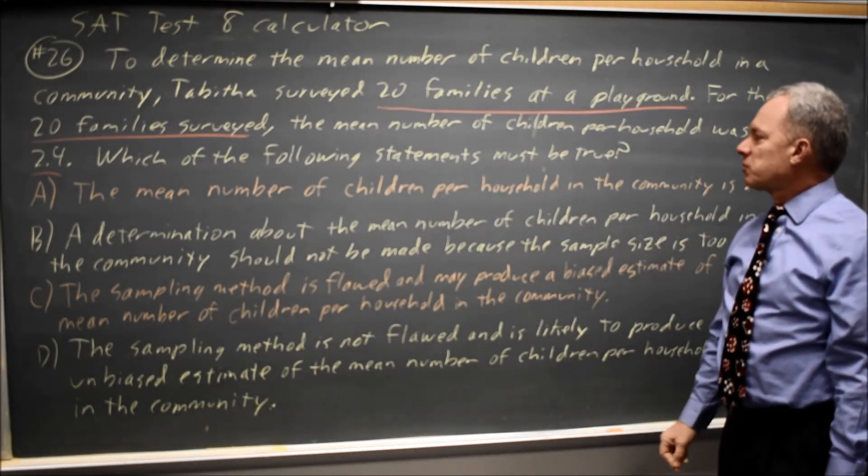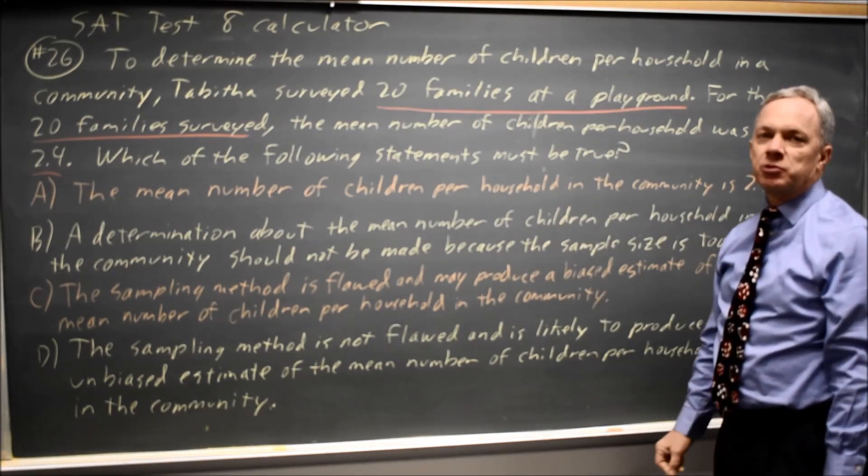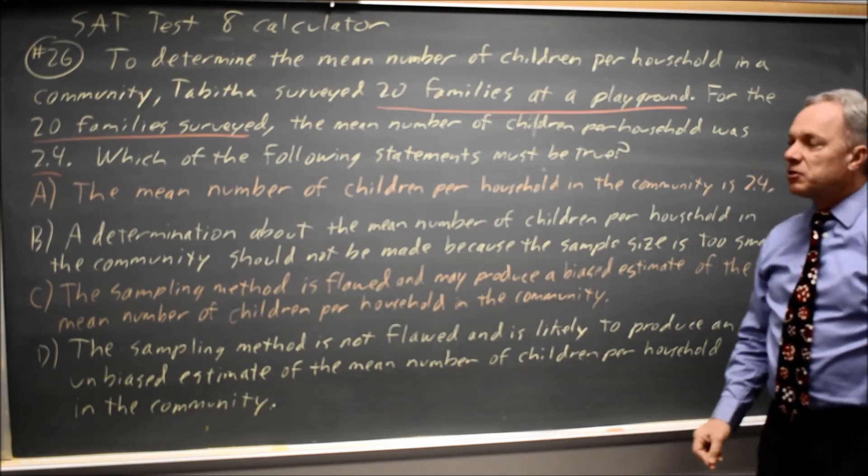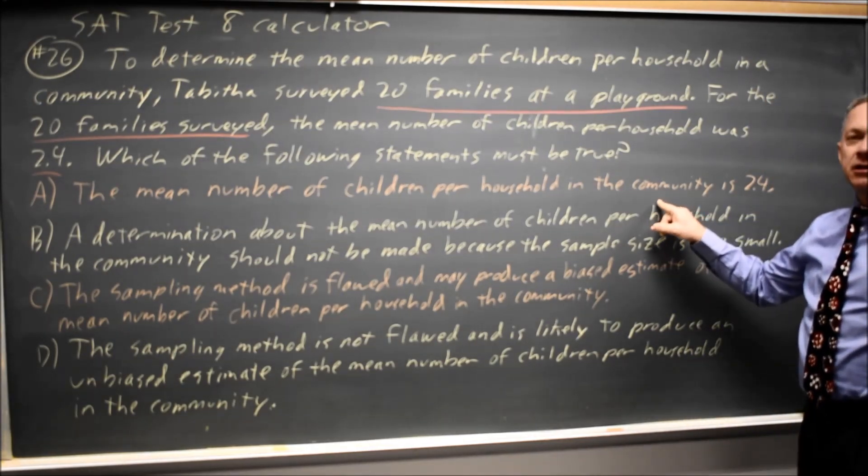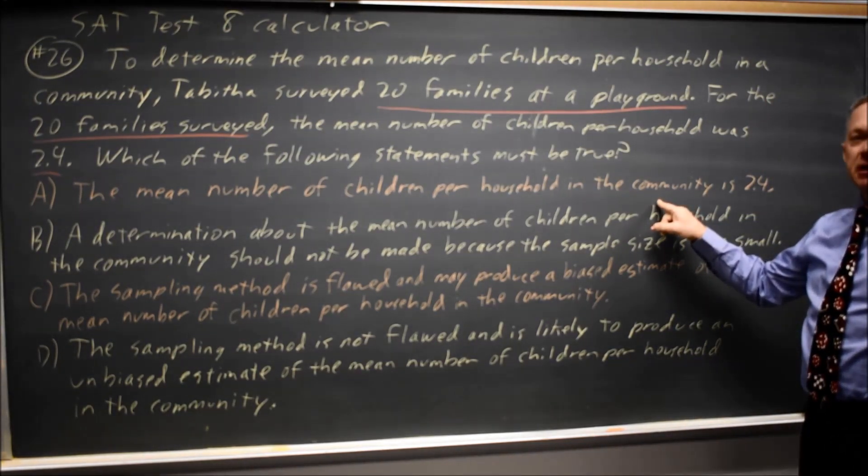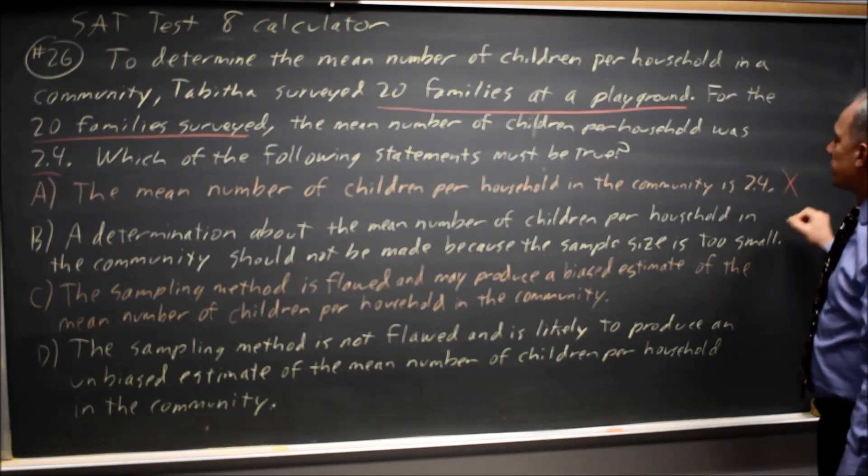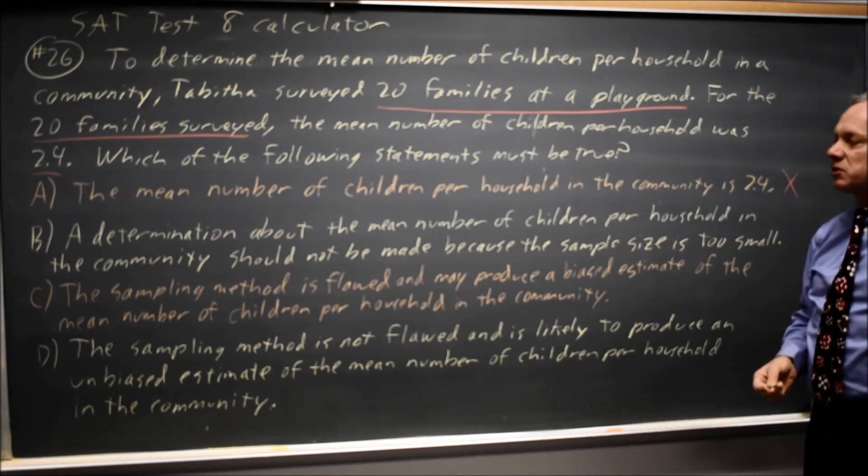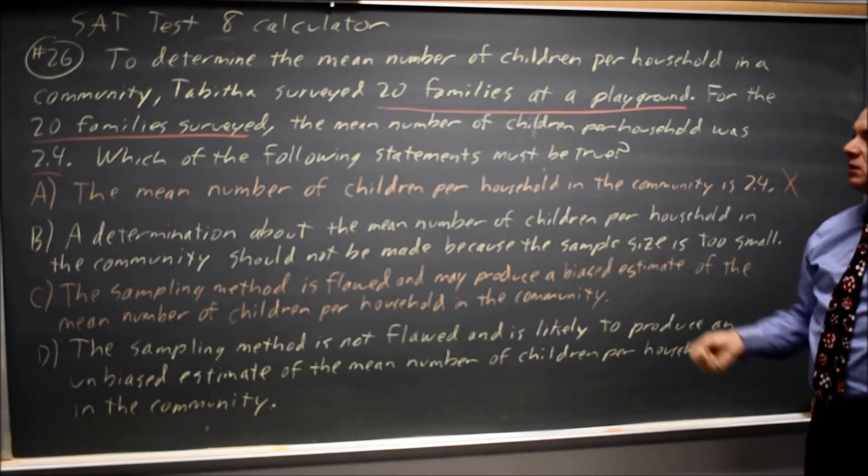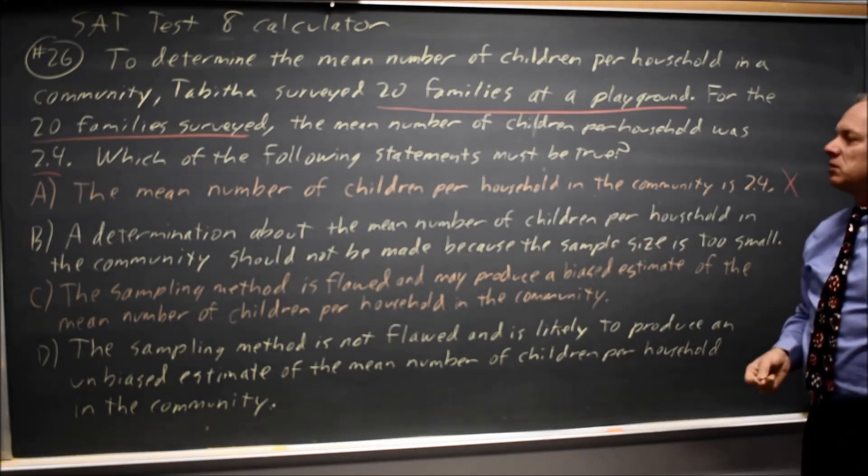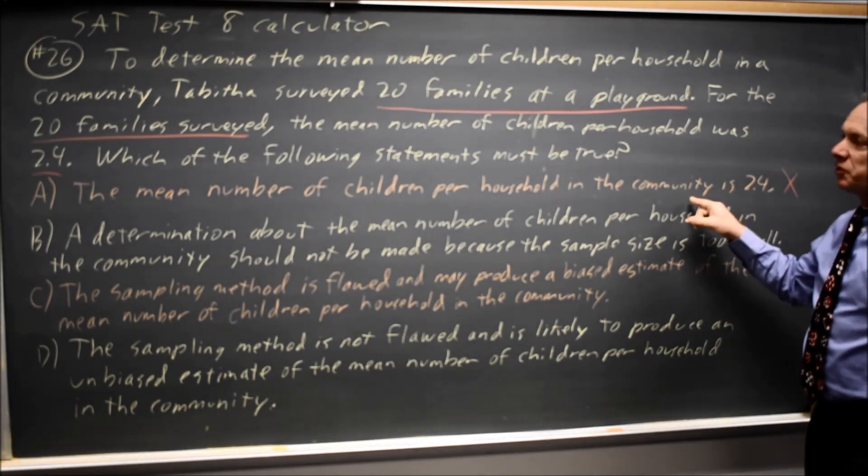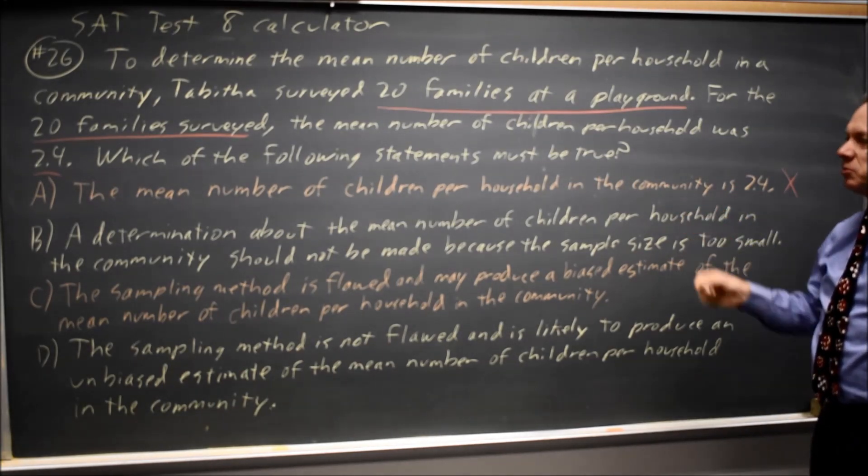Choice A: the mean number of children per household in the community is 2.4. First, even in a perfect survey, your estimate from a sample is not guaranteed to exactly match the value for the entire population, so that's wrong. Second, if there's a flaw in the survey, then you can't be confident the number will even be near 2.4.